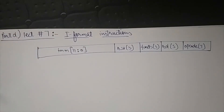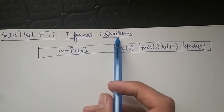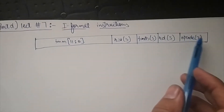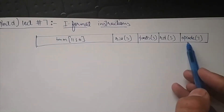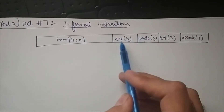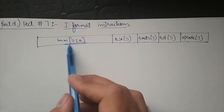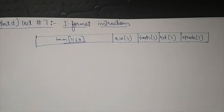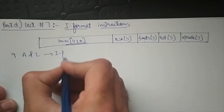Good day everyone. Welcome to part D of lecture number seven. In this particular lecture, we will continue our discussion related to I-format instructions. The encoding of such instructions follows this format: the least seven bits are the opcode, then the destination register, then func3, then the source operand RS1 and the immediate — the least significant 12 bits of the immediate. In part C of lecture seven, we discussed nine arithmetic and logical instructions that belong to the I-format.